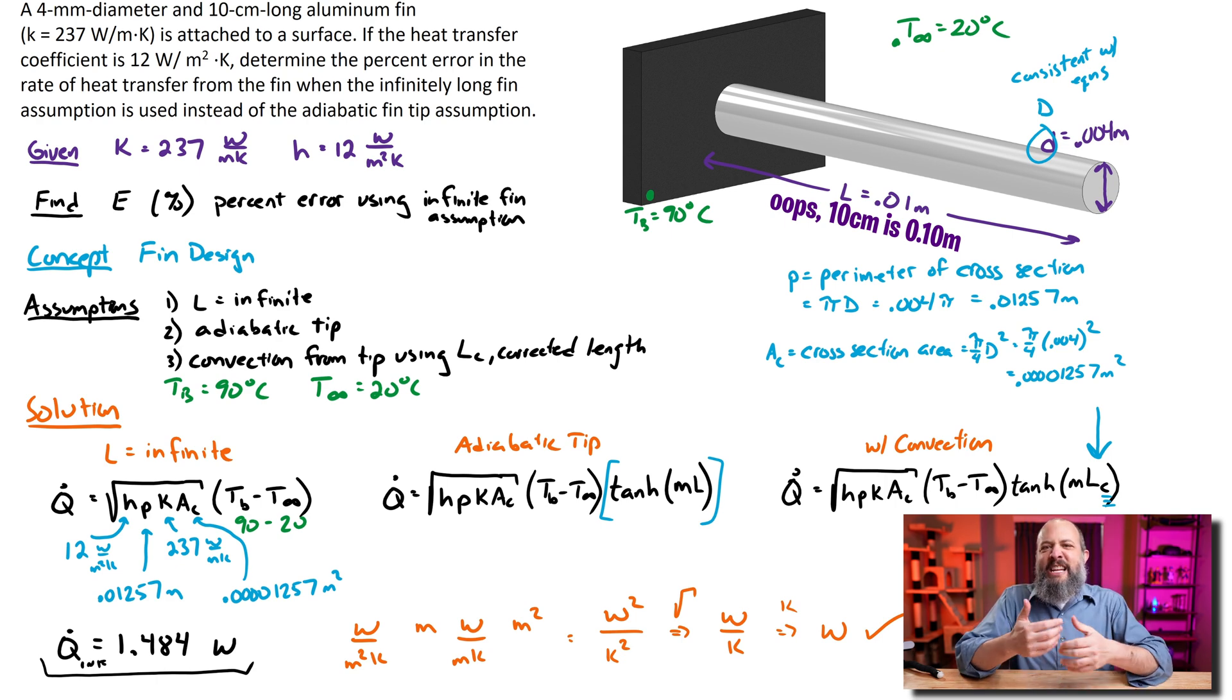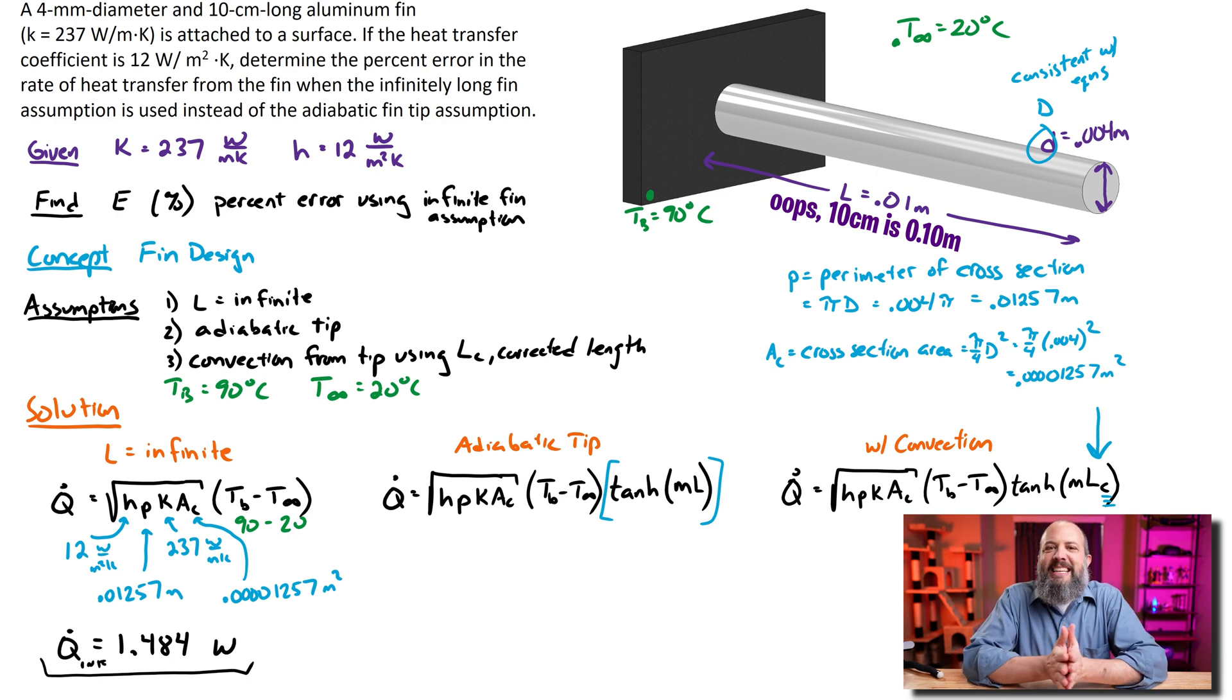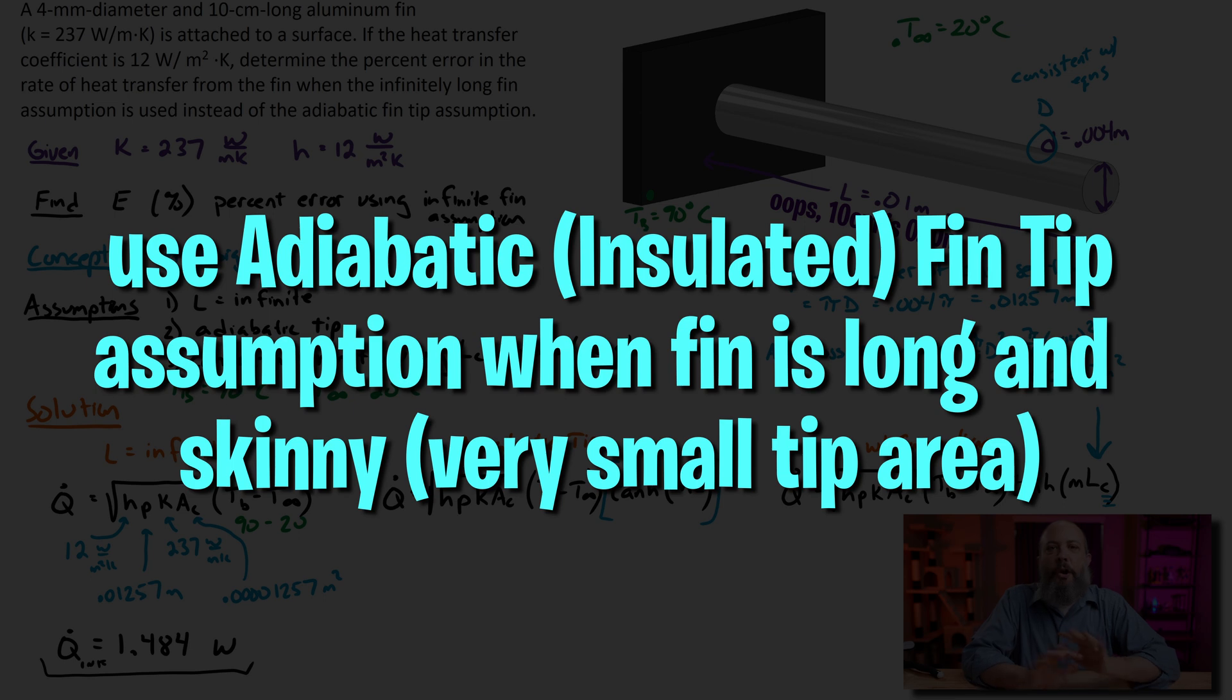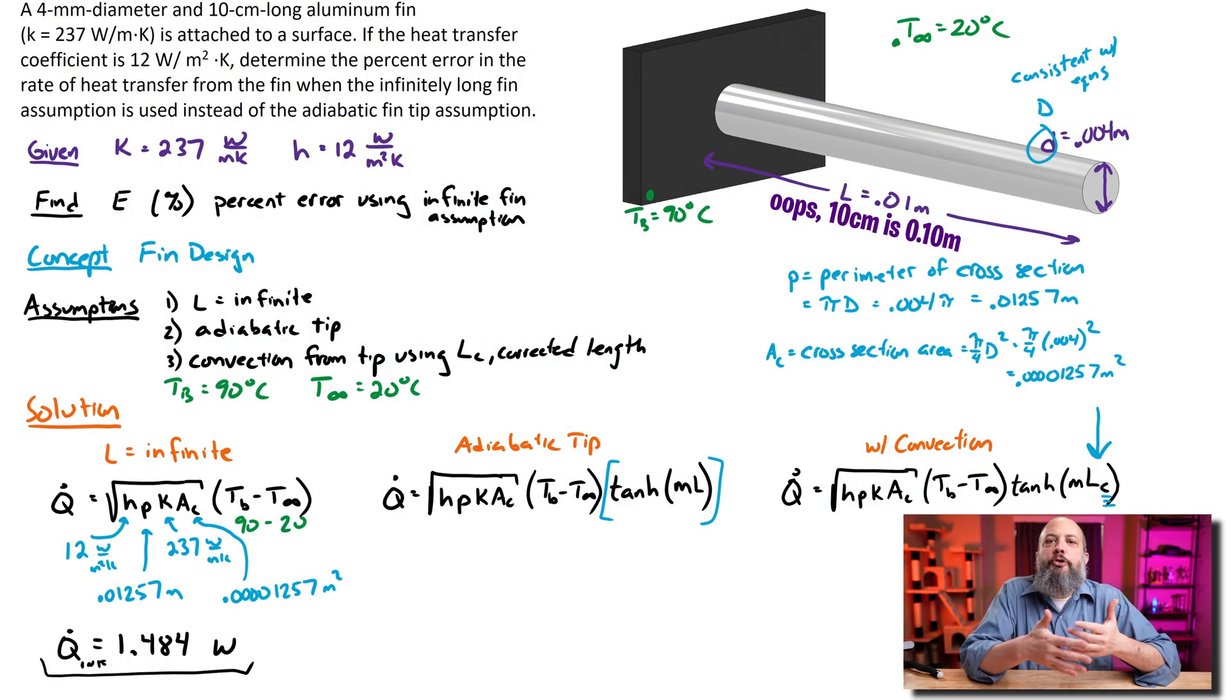Now looking at the adiabatic tip assumption, that's the insulated tip assumption. This is where we are neglecting heat transfer through the tip. You're going to use the insulated tip assumption when you think the end of your extended surface, the tip, is not at the room temperature. The second criteria for adiabatic tip is you would also want the cross-sectional area of your tip to be very small. So if you have a very long fin with a very narrow cross-sectional area, that would be how you could justify an insulated tip, the adiabatic tip. Because all of your surface area for the very long fin would be very large, and your surface area for the little teeny tiny cross-section at the end would be very small. So by ignoring that really small term, your answer would still be pretty accurate.